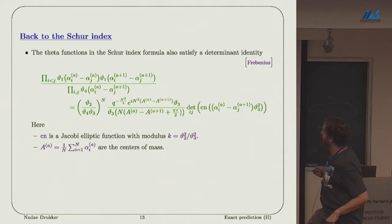If you take the exact ratio of theta functions that we have, it is given by a determinant of another ratio of theta functions, which I write as a CN function, as a Jacobi elliptic function. As opposed to the previous case, which is so simple, here the determinant has an extra pre-factor in front, which is a bit of a nuisance, because these parameters A are the center of masses, they are the sums of these alphas.